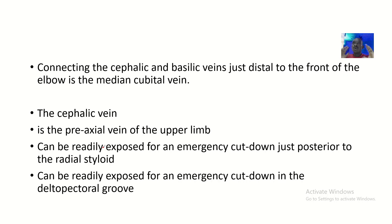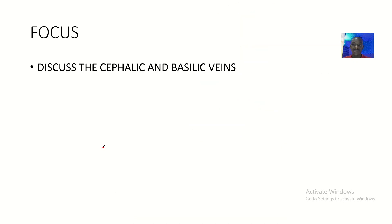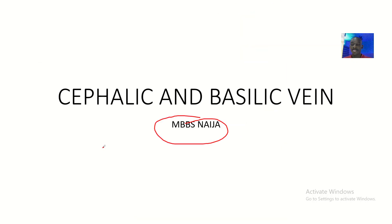Most importantly, the cephalic vein is on the lateral side while the basilic vein is on the medial side. The vein joining these two veins together, just in front of the elbow, is the median cubital vein. I hope you guys enjoyed this tutorial — come back for more. See you guys, bye for now.